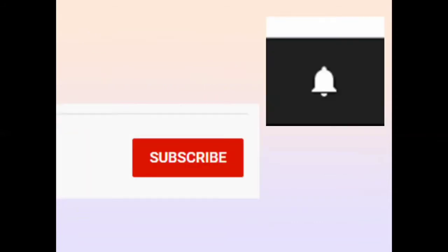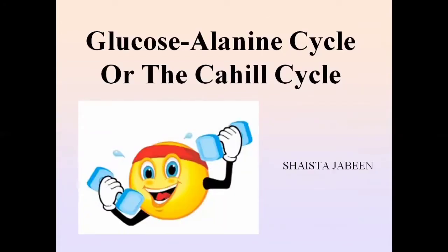Today you are going to learn about the glucose-alanine cycle, also known as the Cahill cycle. There are three things you will learn: first, how glucose is converted to alanine and alanine is converted back to glucose; second, how ammonia is cleared from the muscles and how amino acids are transported from the muscle to the liver; and third, about transamination reactions.